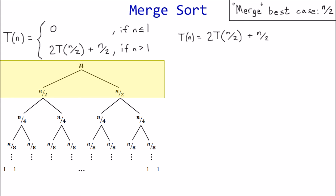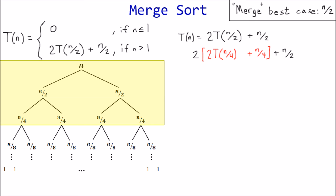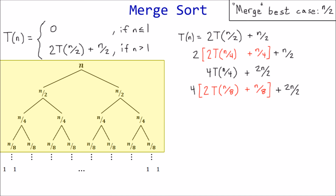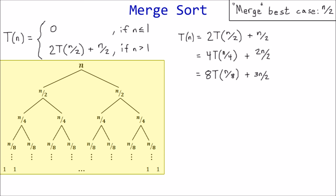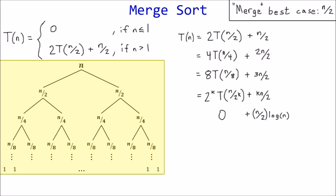For best case, T(n) = 2·T(n/2) + n/2. The first substitution gives 2·(2·T(n/4) + n/4) + n/2, simplified to 4·T(n/4) + n. The next level gives 4·(2·T(n/8)) + n/8 + n. In terms of k, the relation is 2^k · T(n/2^k) + k·n/2. Plugging in log n for k gives best case as (n/2)·log n.